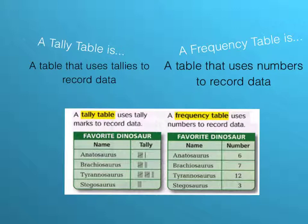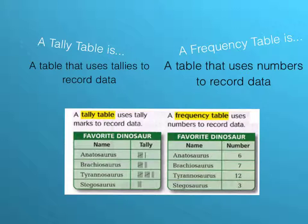First we need to look at what kind of tables I'm talking about. I am not talking about the kitchen table. I'm talking about two different types. This one is called the tally table. A tally table is a table that uses tallies — it's kind of self-explanatory. Look right here, this is a tally table. It uses tally marks to record data in a table.